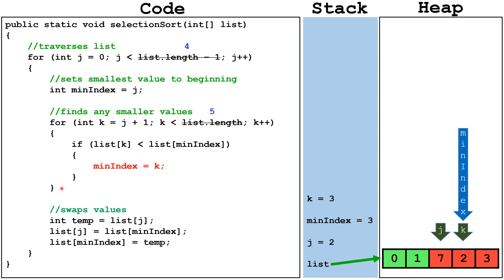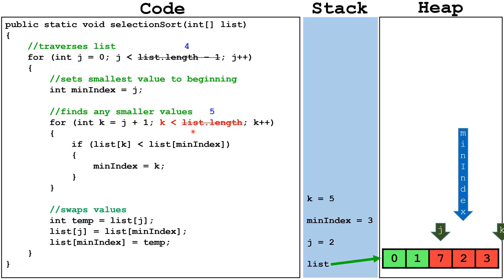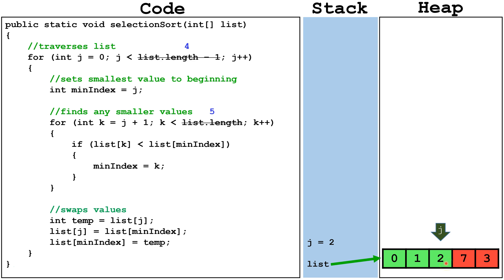Next, we reach the end of the internal for loop and we increment k by 1. We check is k still less than list.length — it is, so we continue. We check is list index k smaller than list min index — it is not, so we skip this line of code and go to the end of the internal for loop. We increment k by 1. We see again k is out of bounds. We check is k less than 5 — it is not, so we terminate the internal for loop. We swap the values in j and min index: we set temp equal to list j, set list j equal to list min index, then set list min index equal to temp. We get to the end of the external for loop and then mark index 2 as sorted.